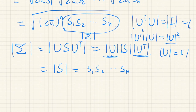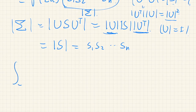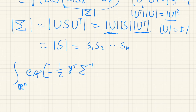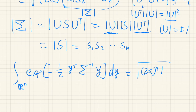Thus we have proved that the integral of exp(−1/2 · y^T sigma^{-1} y) equals the square root of (2π)^n times the determinant of sigma. So if we divide both sides by this, we can see that the density function of the multivariate normal distribution is normalized, and we are done.